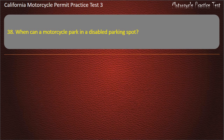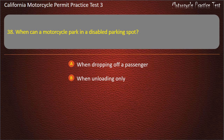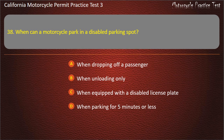Question 38. When can a motorcycle park in a disabled parking spot? When dropping off a passenger, when unloading only, or when equipped with a disabled license plate. Answer: When equipped with a disabled license plate.